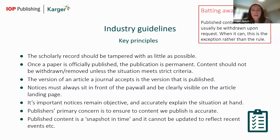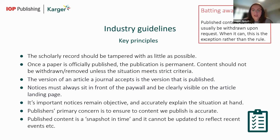The version of an article a journal accepts is the version that is published. Author proofs are an opportunity to remedy minor errors; changes that technically undermine the reviewer's recommendation should be investigated and rejected if warranted. For example, making changes to references post-acceptance technically subverts the peer review process, regardless of intent. Therefore, any requested changes beyond correcting minor errors are taken extremely seriously. Notices must always sit in front of the paywall and be clearly visible on the article landing page, and must remain objective and accurately explain the situation. It is worth noting an exception: name change requests, where publishers review and may correct the name without a notice if the requester prefers, retaining a copy of the original article.